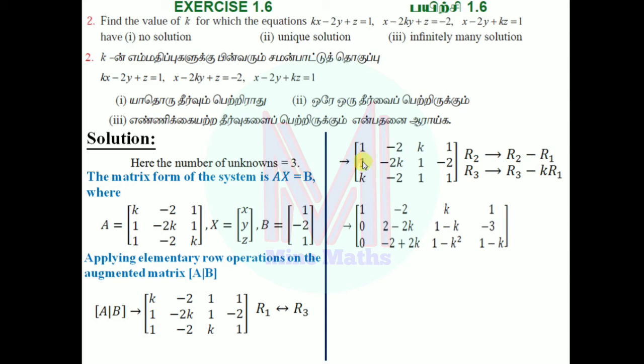After R2 - R1: Row 2 becomes [0, 2-2k, 1-k, -3]. For R3 - k·R1: k times row 1 subtracted gives [0, -2+2k, k-k², 1-k].